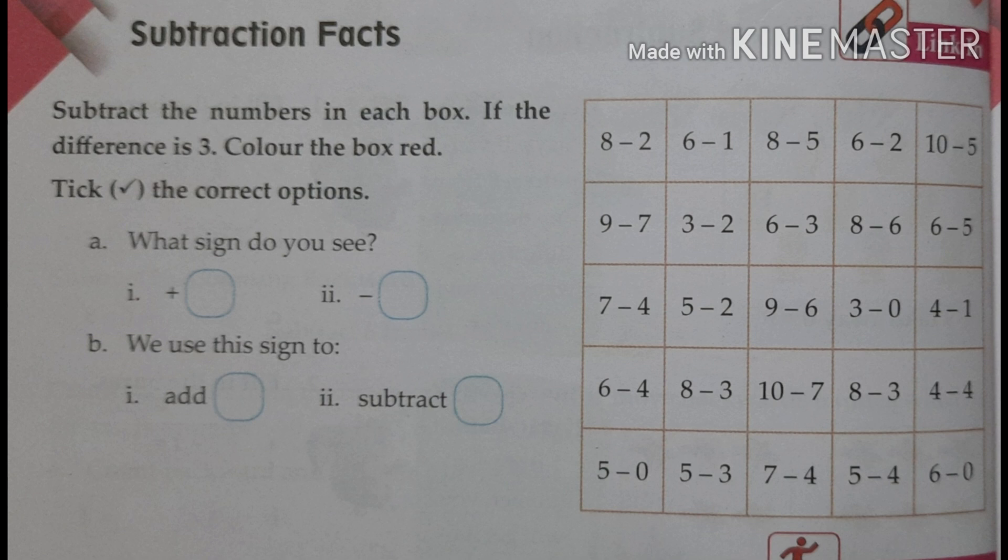That is 8 minus 2, 6 minus 1, 8 minus 5. Like this, many are there. So let us see the question.